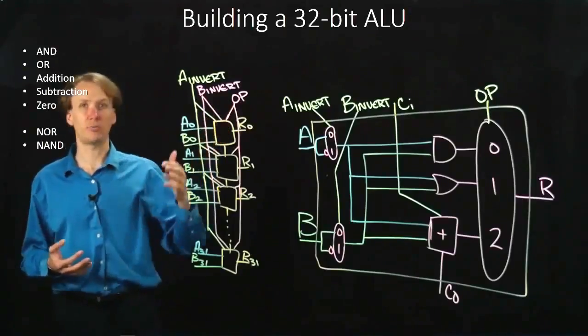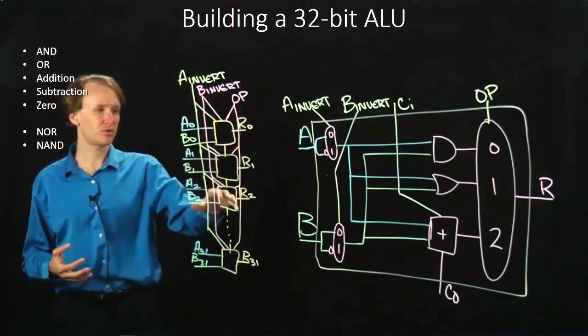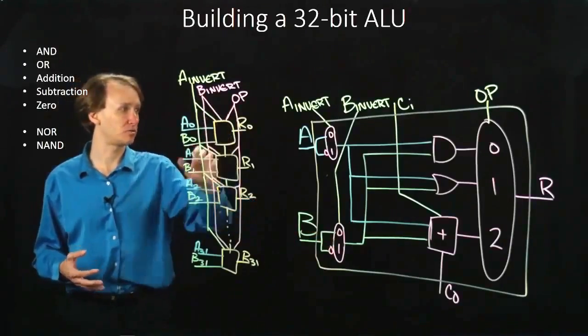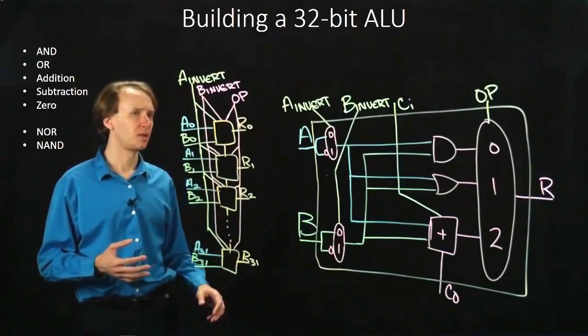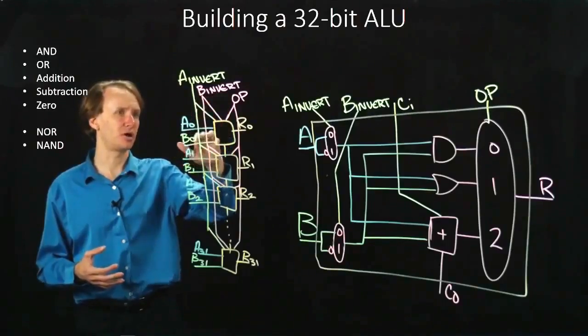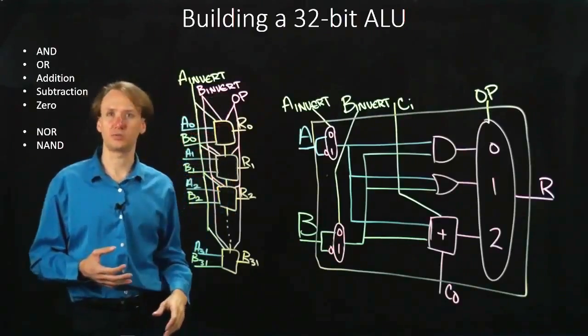At least for the topmost ALU. For the others, obviously, it's bound to the previous carry out. But this means I can actually use this B invert line as my carry in line as well.